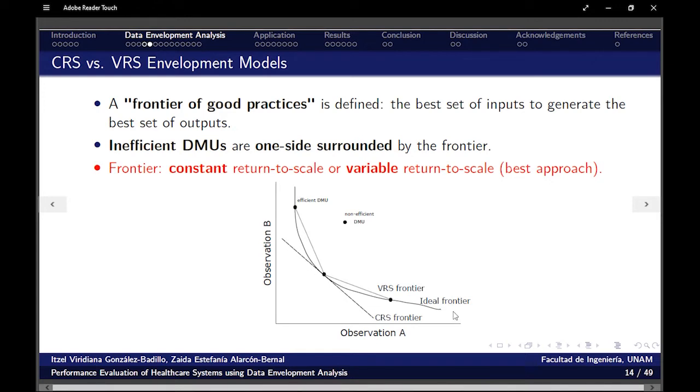We could get a first approach to that with a line or we can make it better by connecting some dots. That connection is the variable returns to scale. It's a better approach to the other one. And note that in the ideal frontier, each and every efficient DMU is located, while here, a non-efficient DMU will not be in that frontier of good practices.